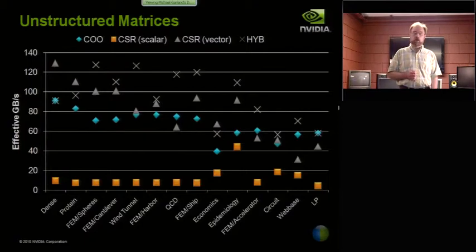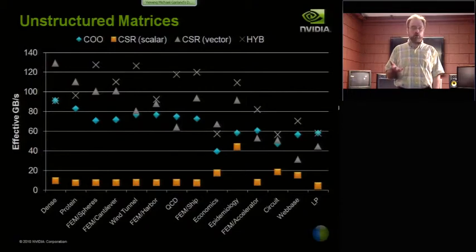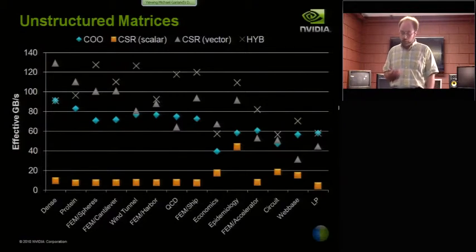And this is just a similar bandwidth plot. So on most of these matrices, we are actually getting a substantial fraction of peak bandwidth. The only ones where we're not are the ones that we have significant row imbalance. We have to use the more expensive coordinate format to load balance better. And there, we're only getting about 60 gigabytes per second. Not bad, but it's not 90% of peak bandwidth either.